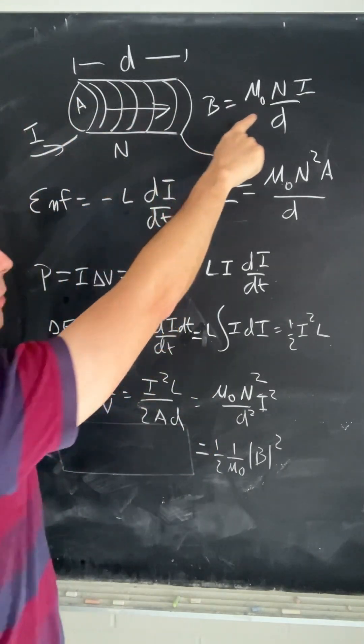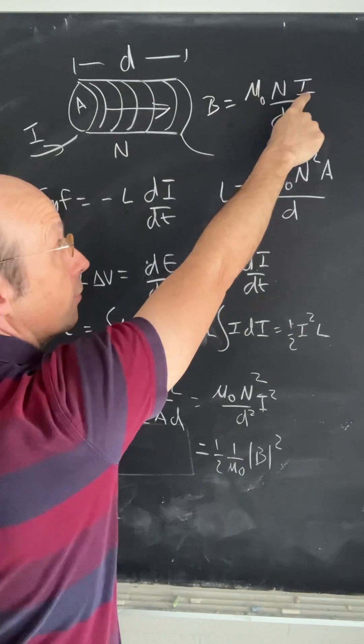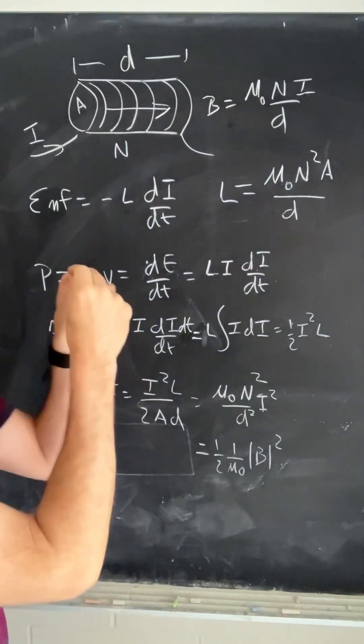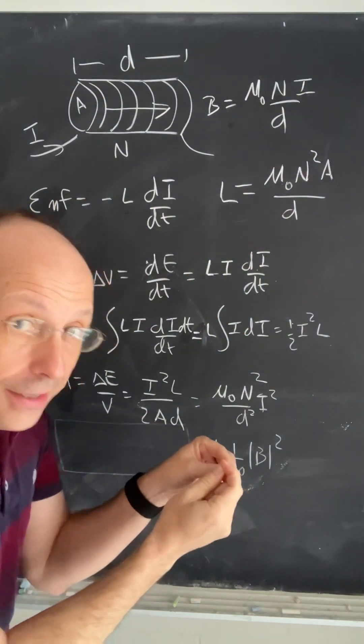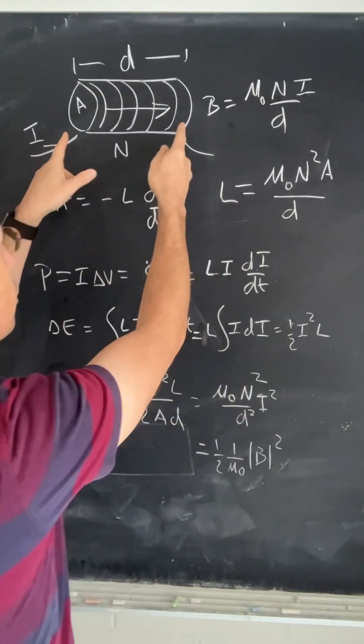We can calculate the magnetic field. It depends on the number of turns, the current, and the length. Also, if you change the current, then you get a voltage across that.